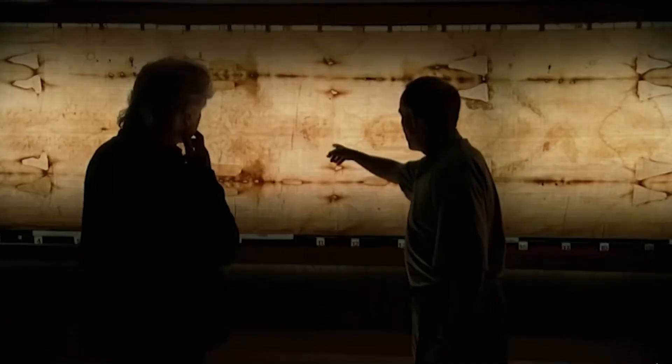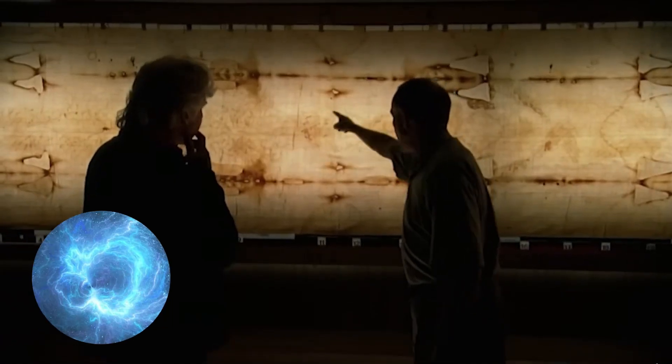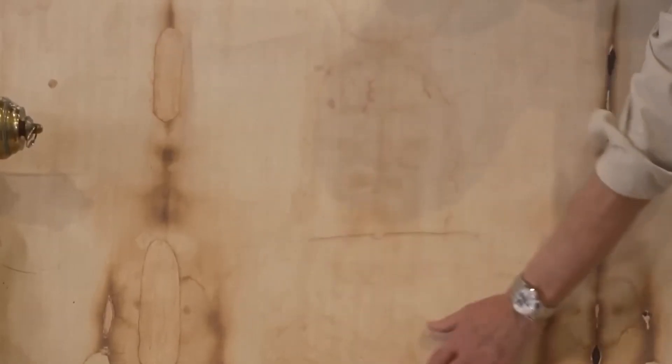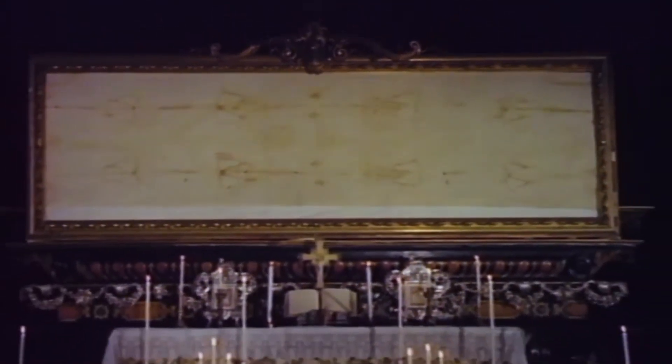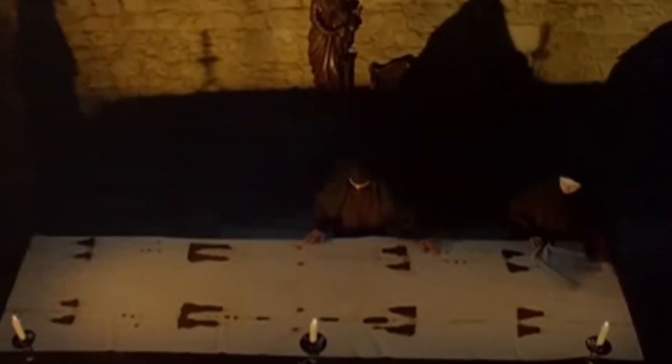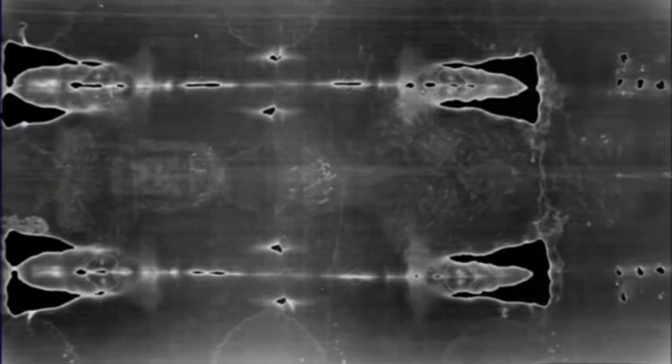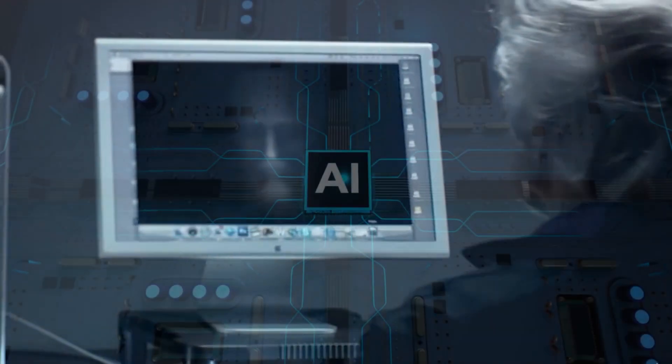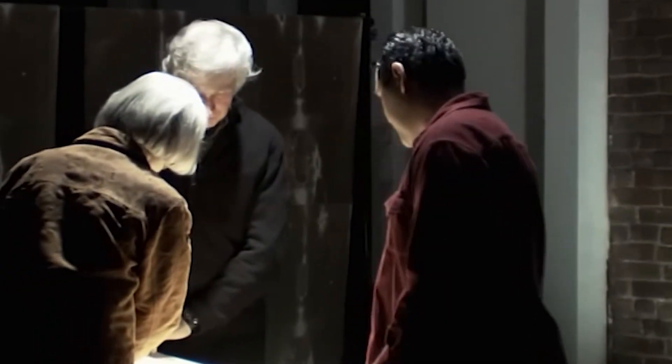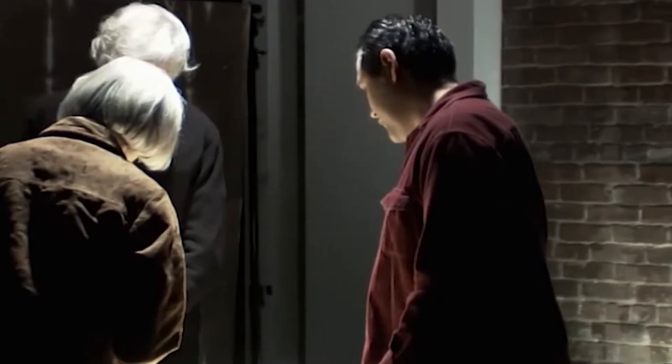The idea is that the image was created by an intense, instantaneous burst of energy, light, or radiation, that emanated from the body inside the cloth. This burst would have been so brief and so powerful that it only discolored the very top layer of the fibers, searing the image onto the linen in a fraction of a second. This idea was always seen as, to put it mildly, extreme. What kind of energy could do that? Well, the AI just gave that theory a terrifying new life.